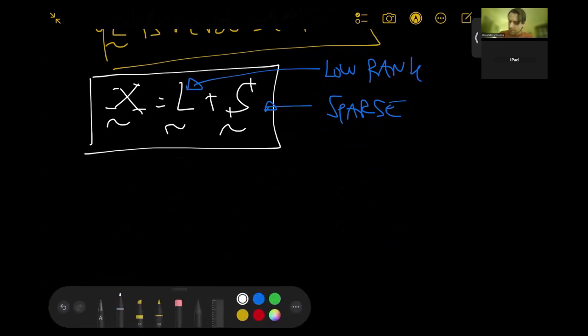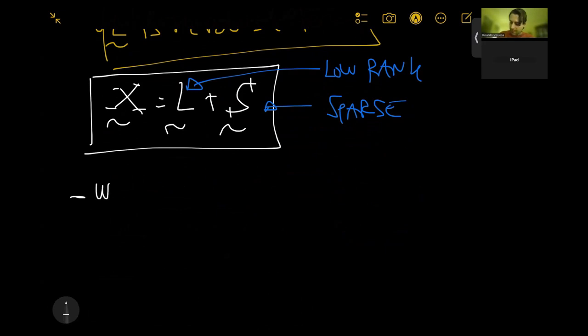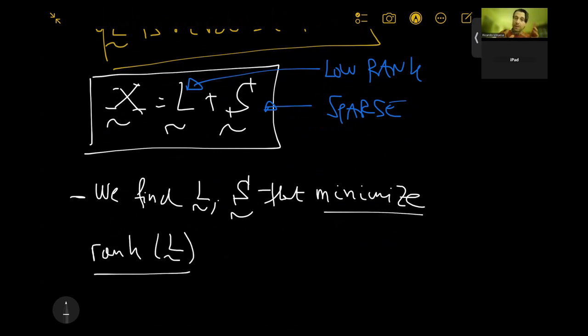The idea, so the key of this method is the following. We need to find the two matrices. So we find L and S that minimize the rank of L. Remember, this is the low-rank matrix. So on the one hand, we need to minimize the rank of L. On the other hand, we need to minimize the number of non-zero elements of S.